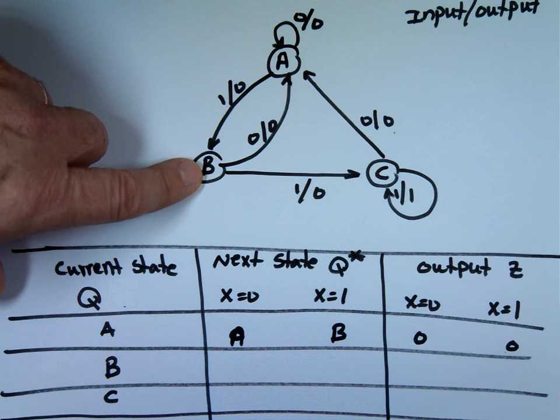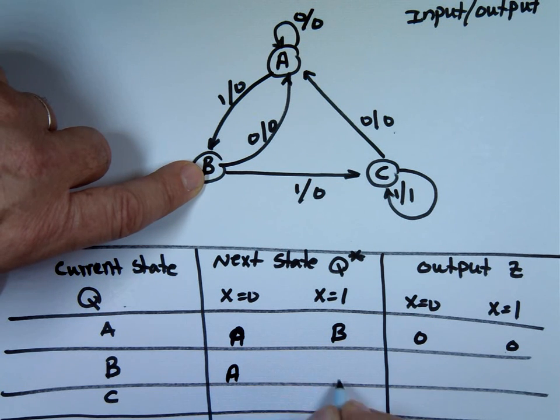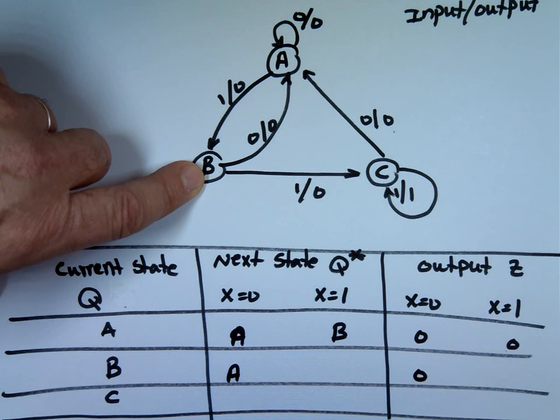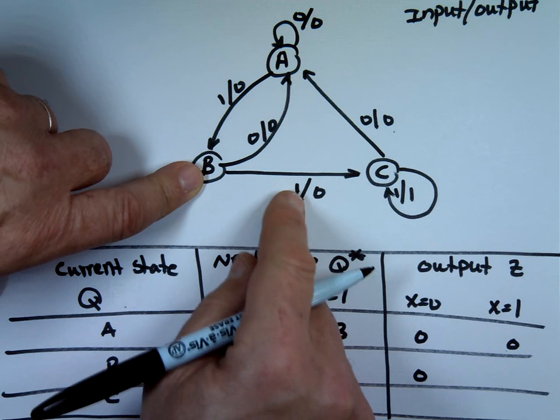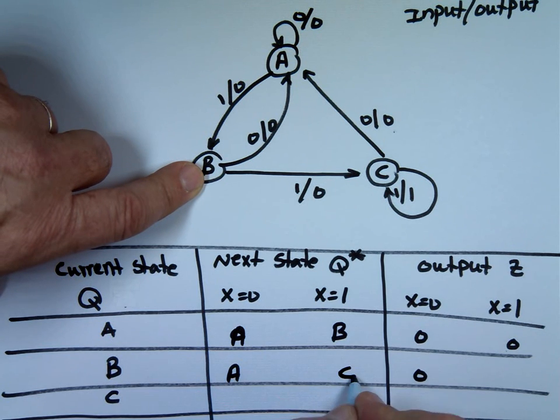If I'm at state B, my input is 0. I go to where? To A. My output is 0. If I'm at B, my input is 1. I go to C. My output is 0.